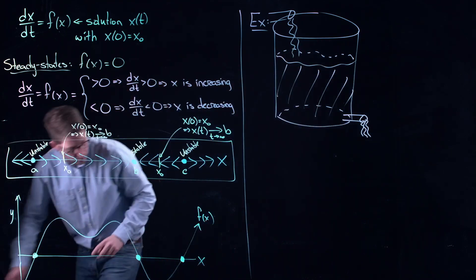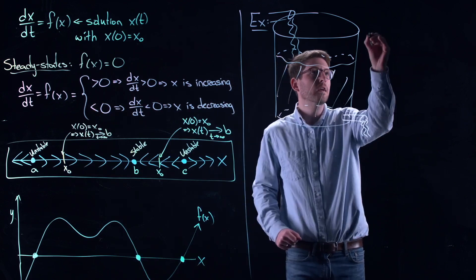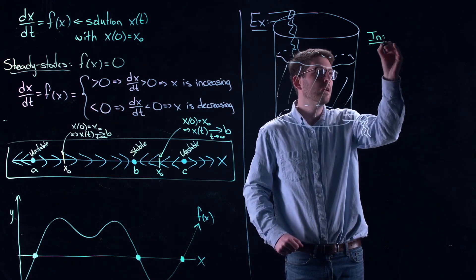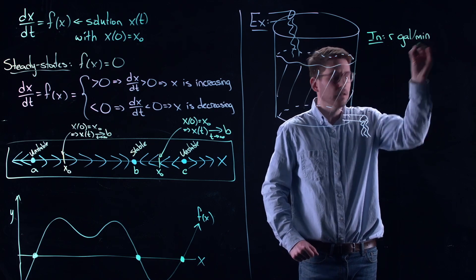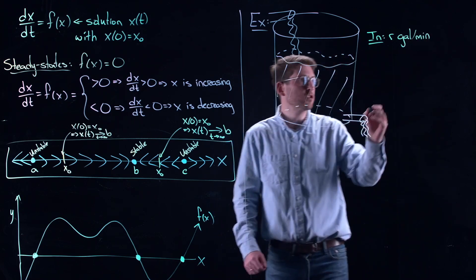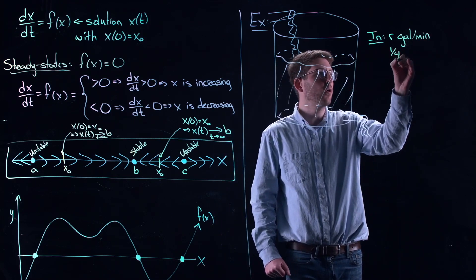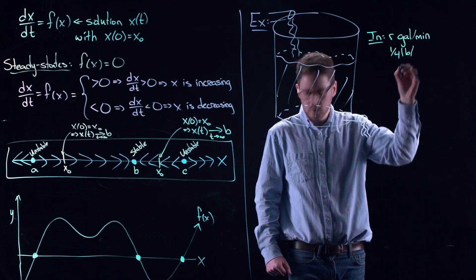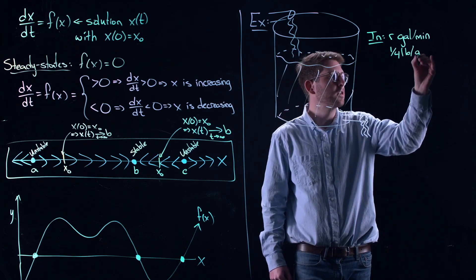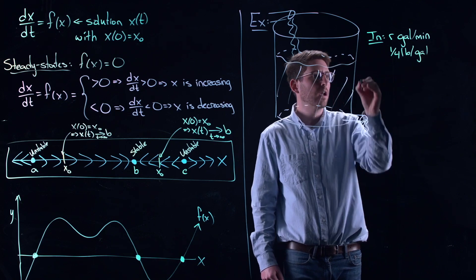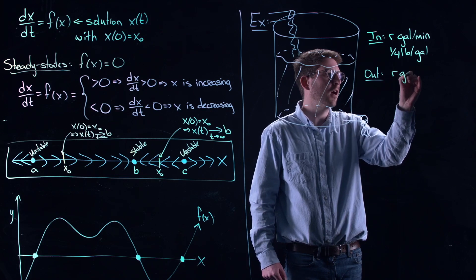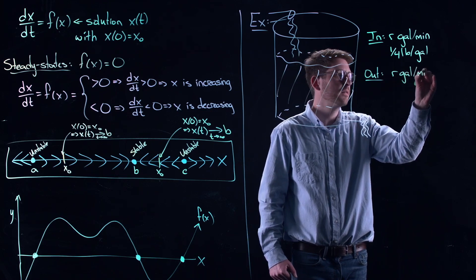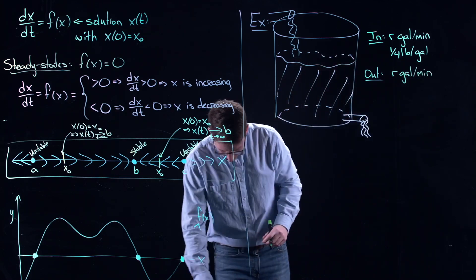And in this case, it's going in at a rate of R gallons per minute. So in, it's R gallons per minute. And what's coming in is a mixture of a quarter of a pound of salt per gallon of water that's going in. And what's going out? Well, the water's moving out at a rate of R gallons per minute.